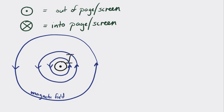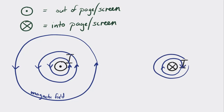Now let's draw the magnetic field around a current going into the screen. In that case, the magnetic field is clockwise around that wire, and it's stronger closer to the wire and weaker further away.